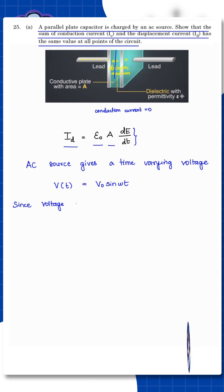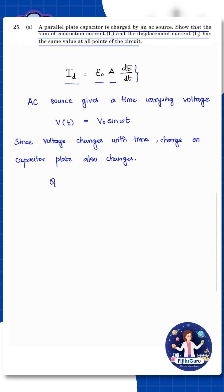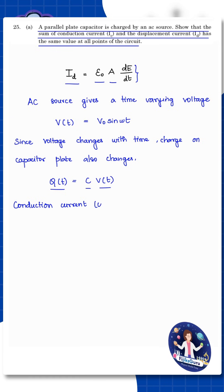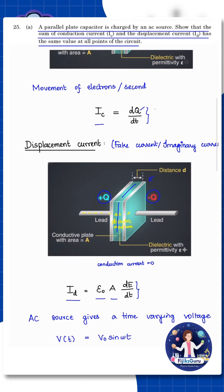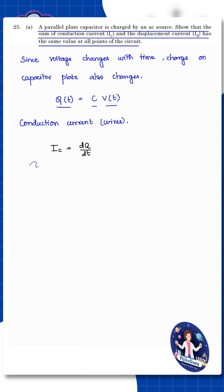Since voltage changes with time, the charge on the capacitor plates also changes. Using Q equals C times V, the charge with respect to time is capacitance into voltage. So the wire conduction current — conduction current in wires — is IC equals dQ/dt. This is the real electron flow towards the capacitor plates; that is the conduction current. Inside the capacitor, conduction current is zero.